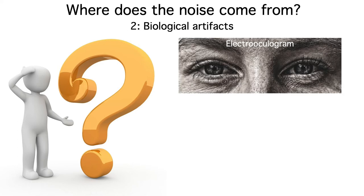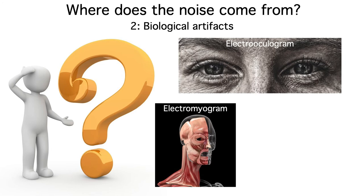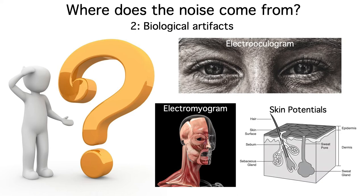Biological artifacts that are generated outside the brain are the second major source of noise in EEG recordings. For example, eye blinks and eye movements create large voltages called the electrooculogram. These voltages conduct to our scalp electrodes, often creating artifacts of over 100 microvolts. The muscles on the head and neck also create high-frequency voltages called the electromyogram that can contaminate the EEG. And the skin itself is an electric organ that produces slow voltage changes called skin potentials.